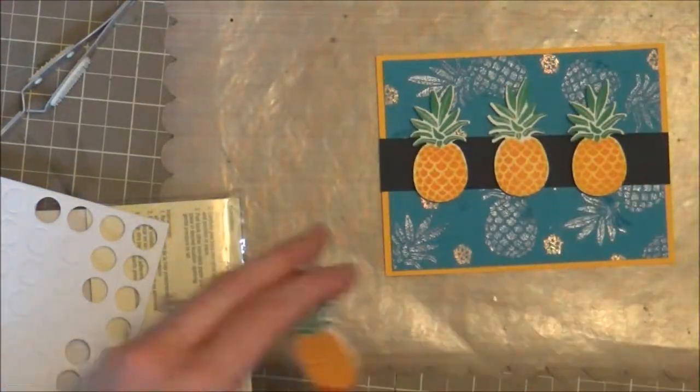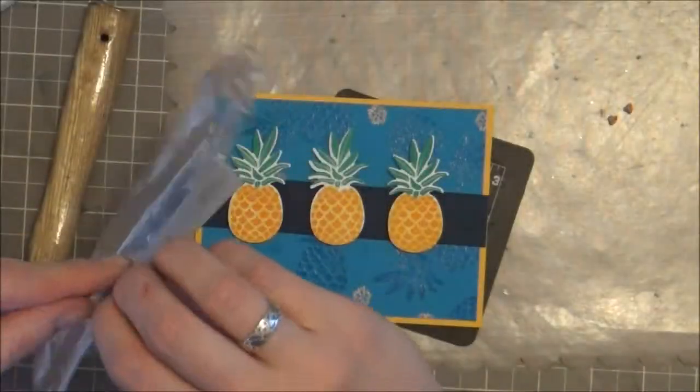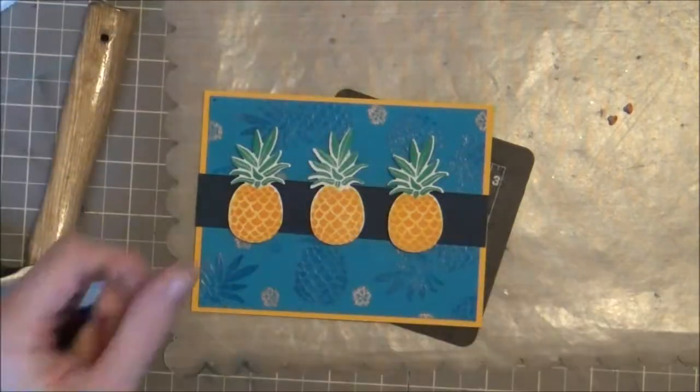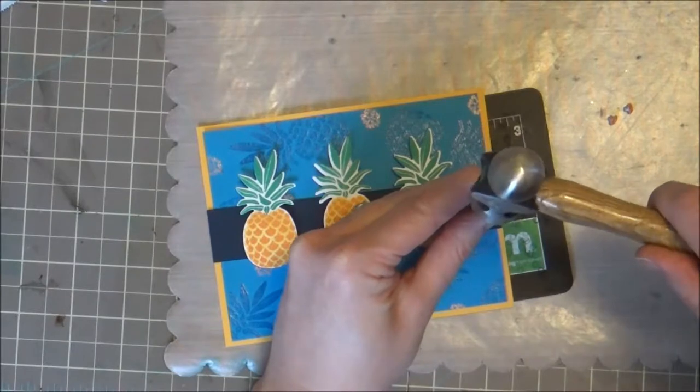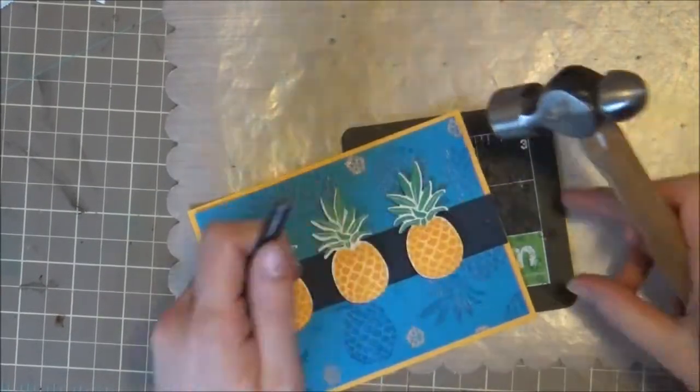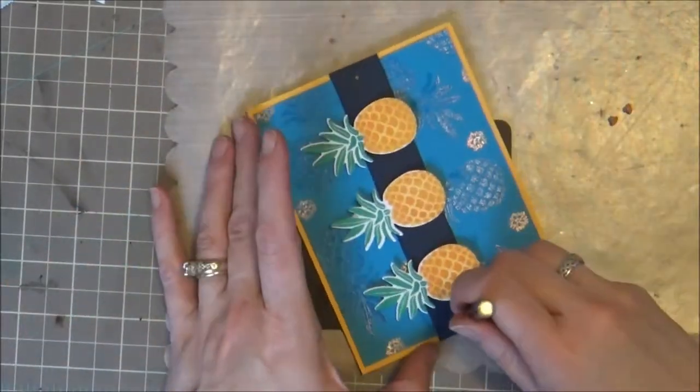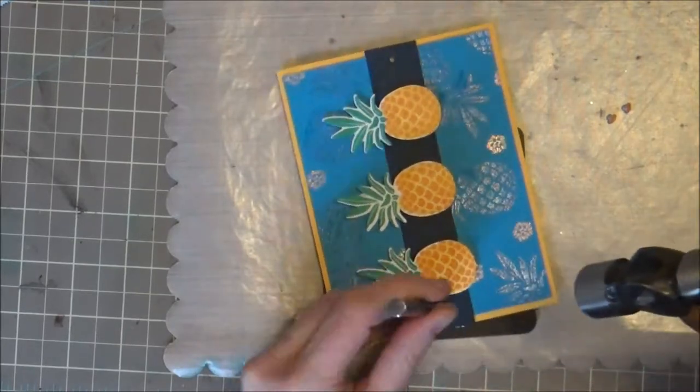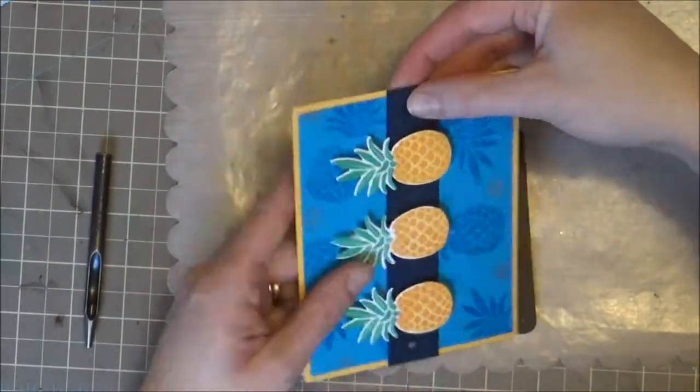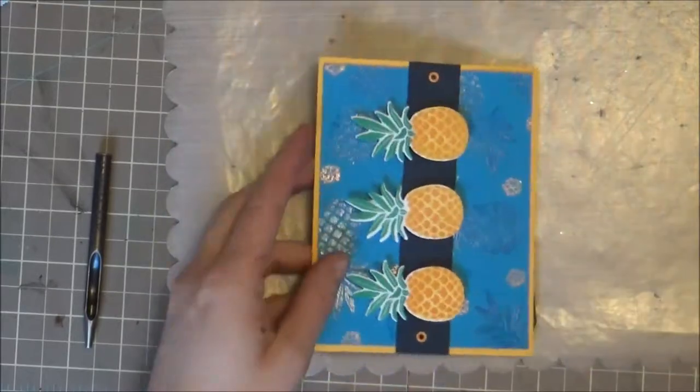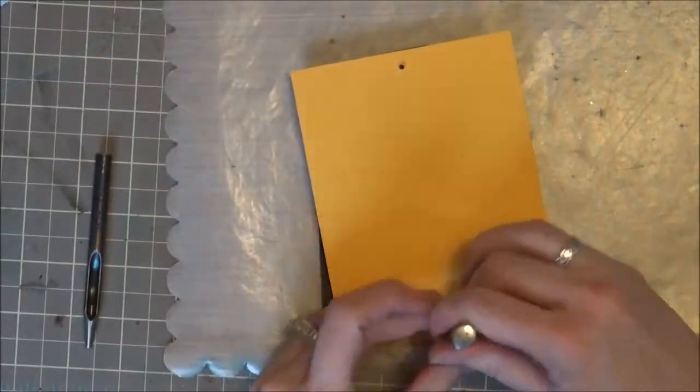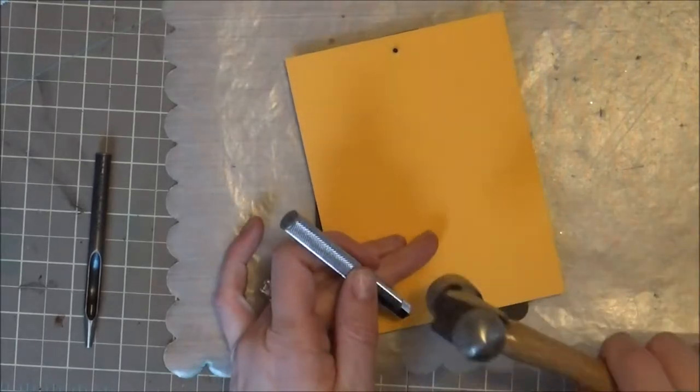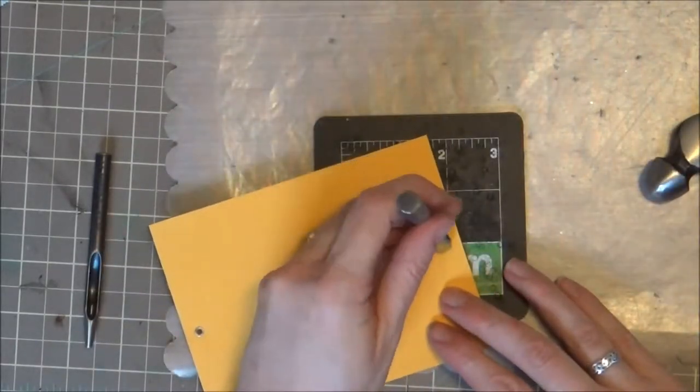I'm using my eyelet setting tool kit here—this is a metal hole punch and a hammer. Make sure if you use these that you hammer right on—in this case I've got a small setting mat. Then just insert those eyelets and then set them. They were really the perfect color for this card.